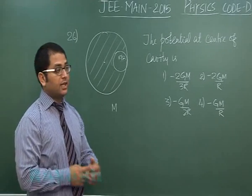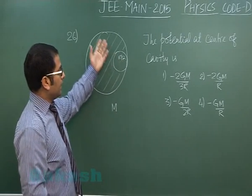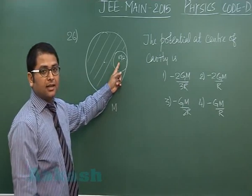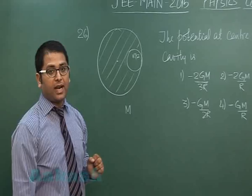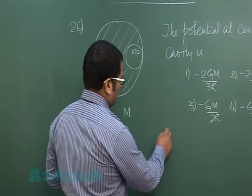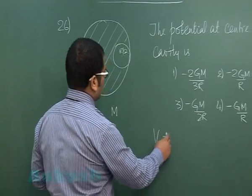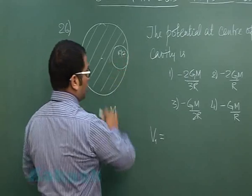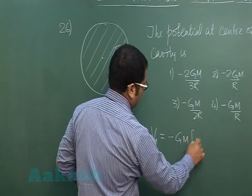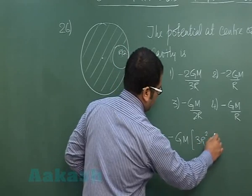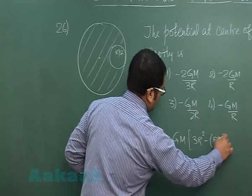Of course, it's a good use of the principle of superposition. First, we'll assume there is no cavity and find the potential here. Then we'll find the potential due to this solid sphere at the center and subtract it. V1 is the potential due to the whole sphere had there been no cavity. That would be minus GM[3r² - (r/2)²]/2r³.